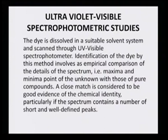A close match is considered good evidence of chemical identity, particularly if the spectrum contains a number of sharp and well-defined peaks. This is one of the best methods because the lambda max is the main criterion — every colorant molecule or chemical molecule may have a visible or UV region lambda max that depends on its chromophoric group, making it significant of its structure as well.